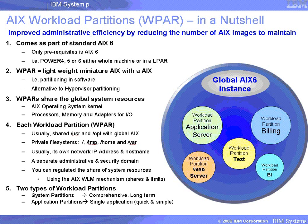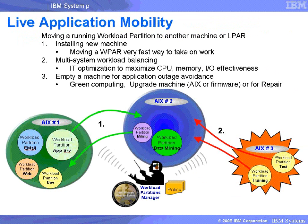There are two types of workload partition: a system partition and an application partition. I can immediately see three good uses for live application mobility. Firstly, if we've got a new machine just installed and we install AIX6 on it, we can right now move some workload partitions onto this new machine so that we can make use of these new resources immediately, rather than having to wait a number of days to move workloads to it.